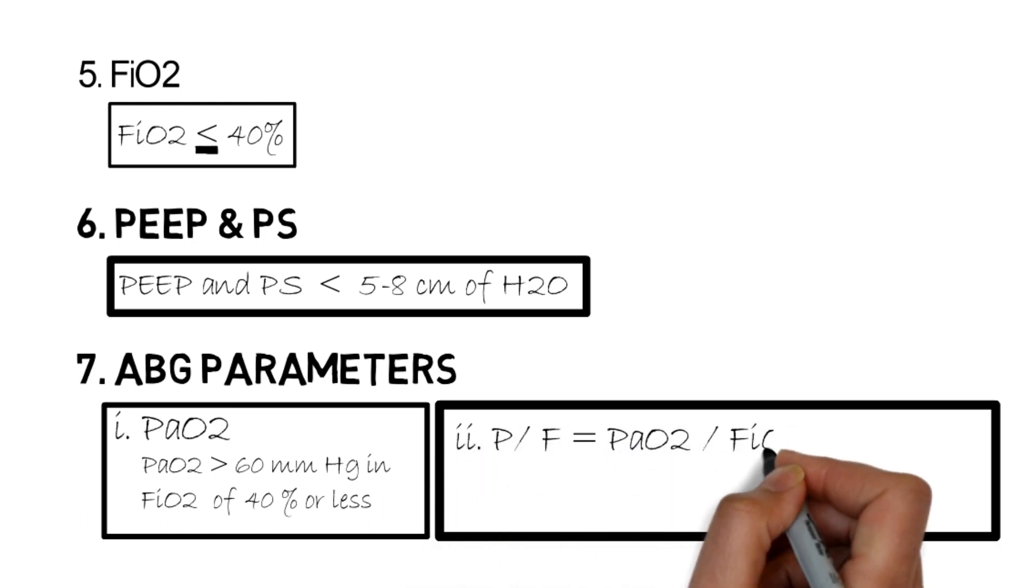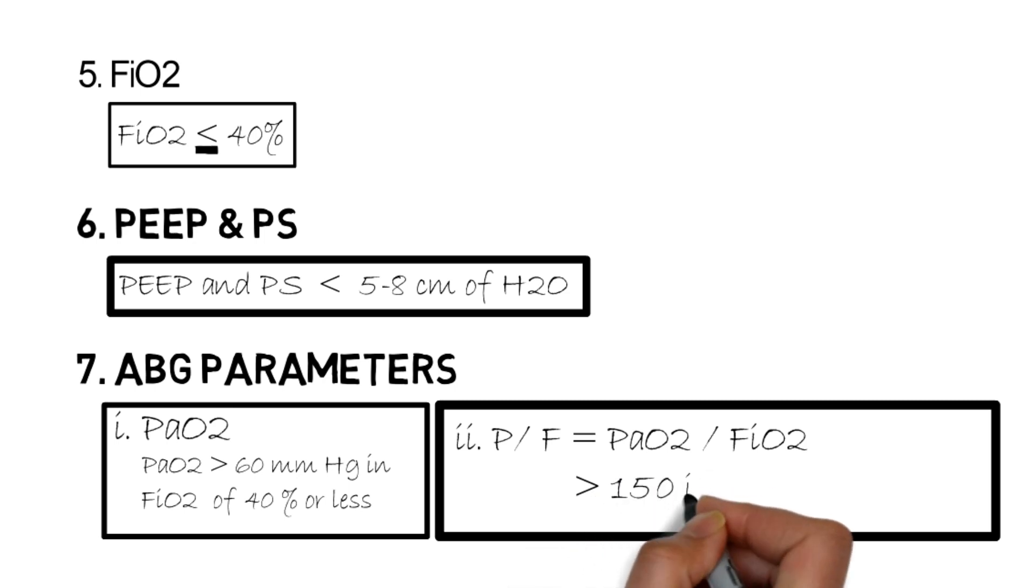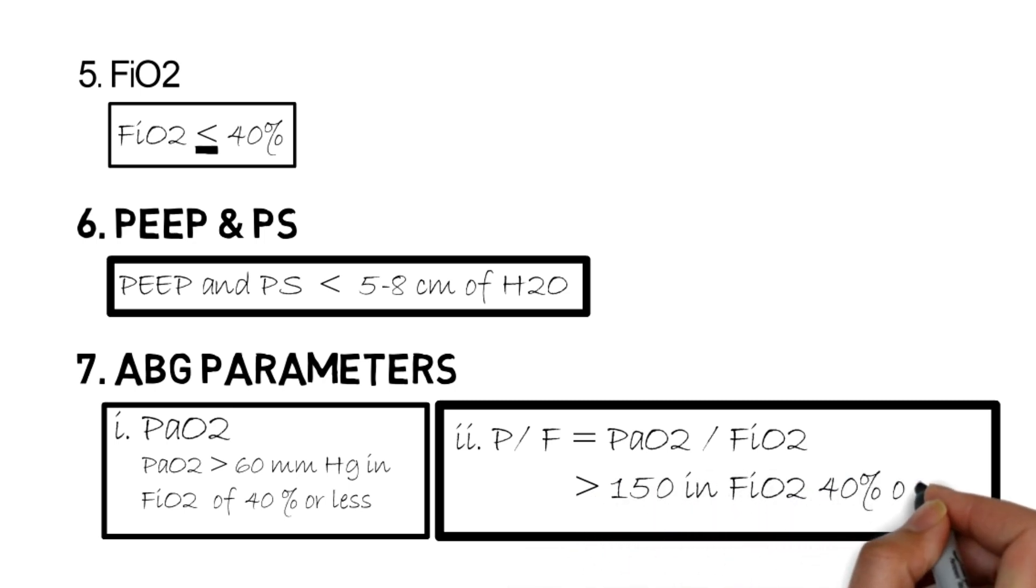Next is the ratio of partial pressure of oxygen in arterial blood to fraction of inspired oxygen, the PaO2/FiO2 ratio. It should be more than 150 with FiO2 of 40% or less. Last is oxygen saturation, which should be 90% or more.